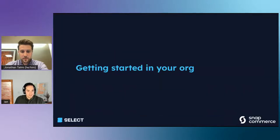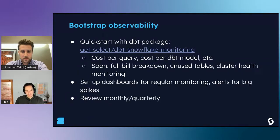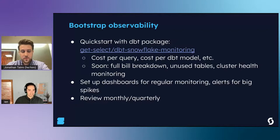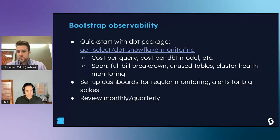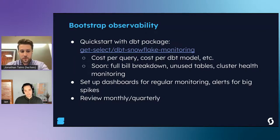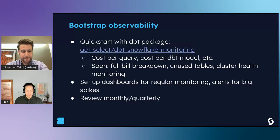To get started in your organization today: the single most important thing is building an understanding of what's driving your bill, and you'll likely need to go deeper than warehouse-level to understand what's happening within each warehouse. You can easily do this using the Snowflake account usage views. To help people out, we've put together an open source dbt package that will give you the cost per query and cost per dbt model methodology described earlier. Later this week we're going to release a full bill breakdown you can plug into your dashboards for regular monitoring, or use with an observability tool to set up alerts for spikes. Then institute some type of review cadence - monthly, quarterly, anything is better than nothing.